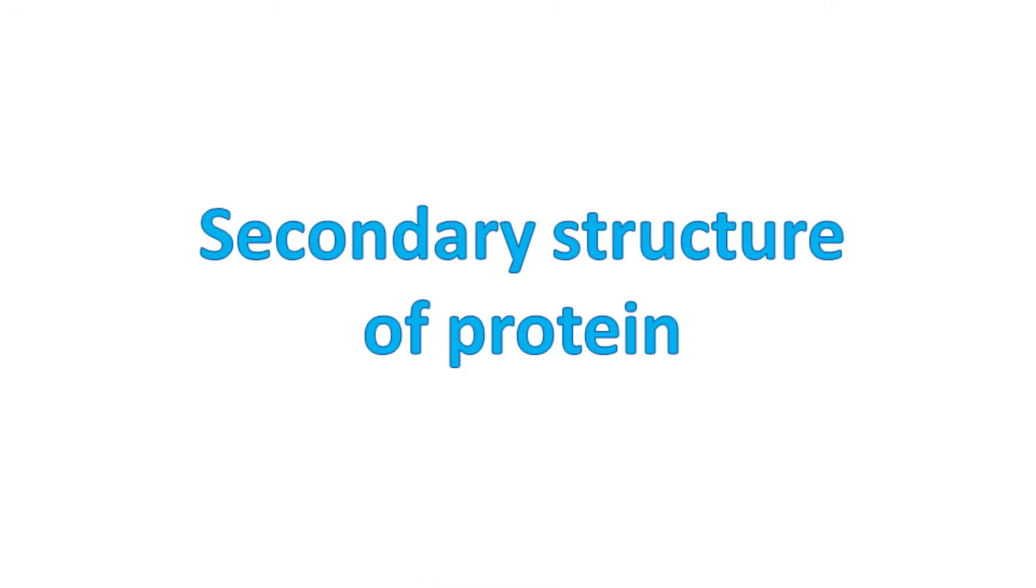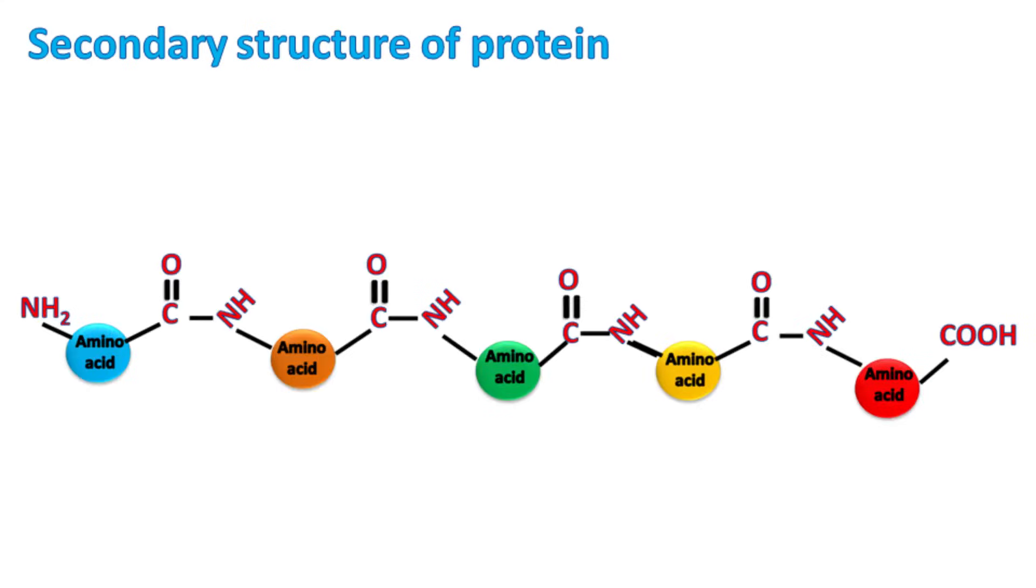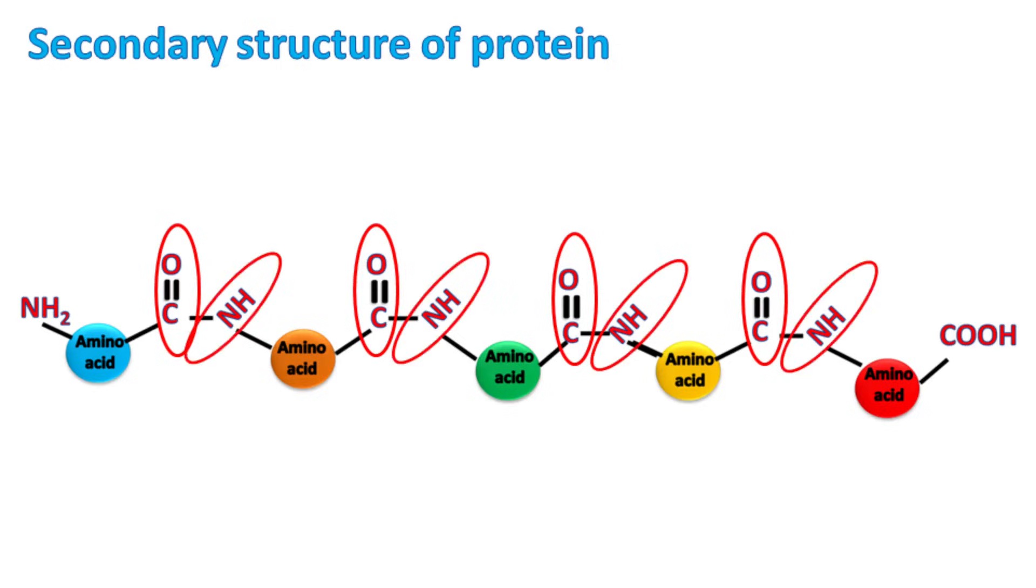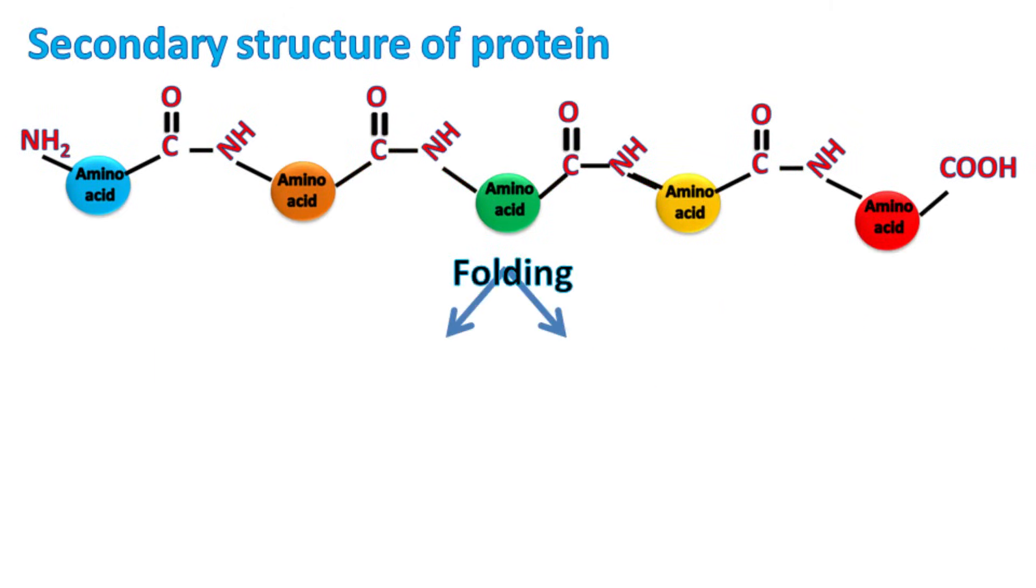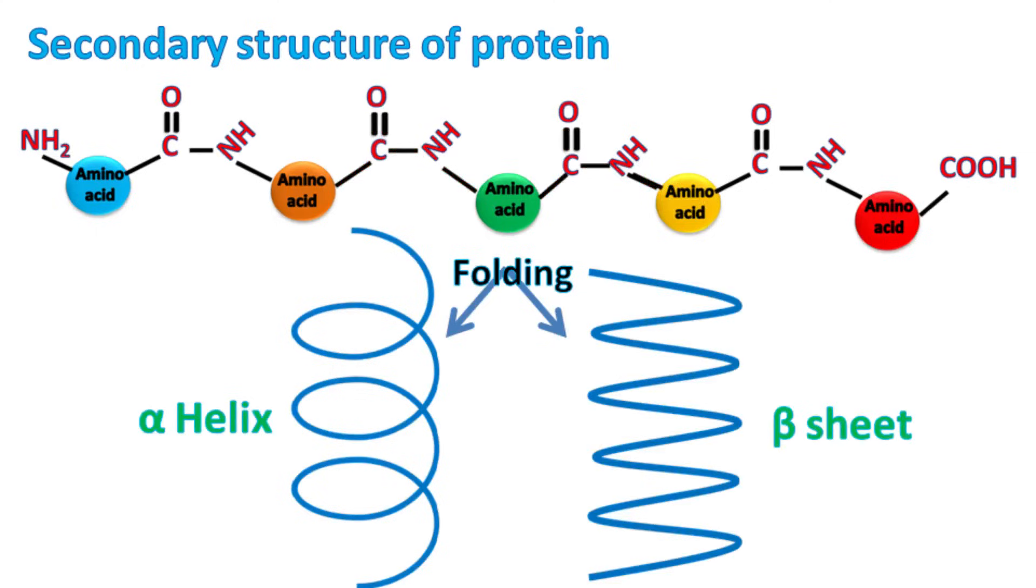Secondary structure of protein. In the primary structure of protein, the amino acids are linked by peptide bond. The peptide bond has an oxygen attached with the carbon and a nitrogen attached with the hydrogen. Both oxygen and hydrogen have the ability to form hydrogen bond, and this results in folding of the peptide chain either in alpha helix or beta sheet.